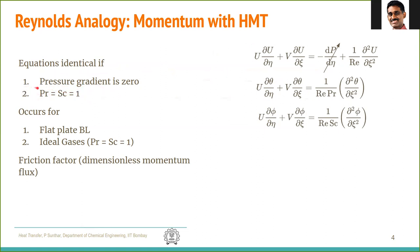When does this occur? For a flat plate boundary layer, outside the boundary layer there is a free constant velocity profile throughout, which means the pressure gradient in the x-direction is zero — easily achieved for a flat plate. And for most gases and steam, the Prandtl number and Schmidt number are approximately 1. So if you have gases flowing over a flat plate, we can achieve the Reynolds analogy with all three boundary layers given by the same equation.